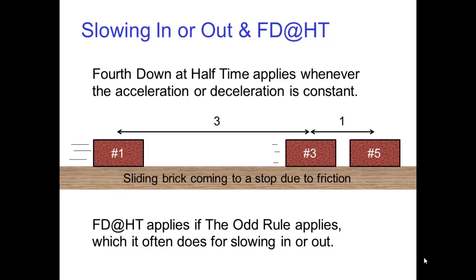Finally, the fourth down at half time rule isn't just for falling motion. It applies whenever the acceleration or deceleration is constant. For example, a sliding brick coming to a stop due to friction follows the fourth down at half time rule. Fourth down at half time applies if the odd rule applies, which it often does for slowing in or slowing out.